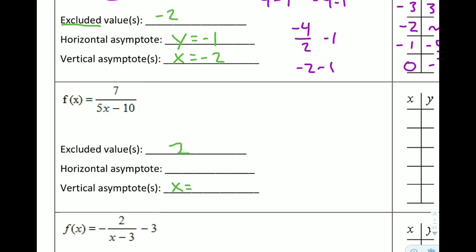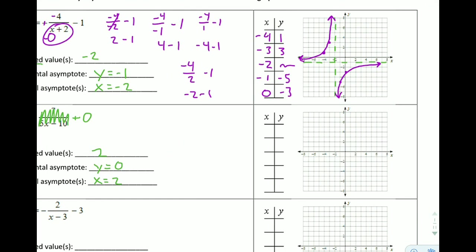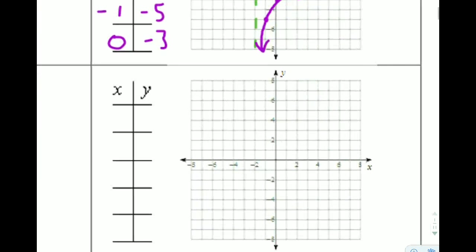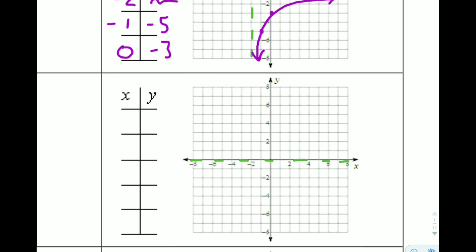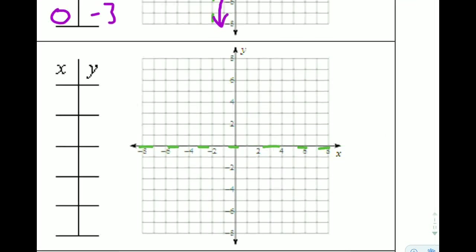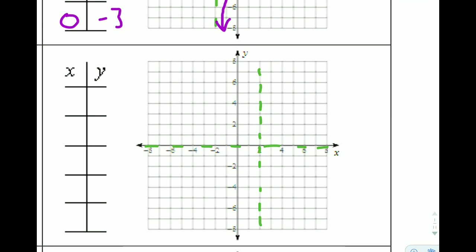The vertical asymptote right away comes from the excluded value, so x equals 2. The horizontal asymptote is what we're left with when we remove the fractional part. I don't see anything outside the fraction here, which is the equivalent of plus 0, so the horizontal asymptote is y equals 0. The horizontal line y equals 0 is just the x-axis, and the vertical line x equals positive 2 — I'll draw a dashed line on that.